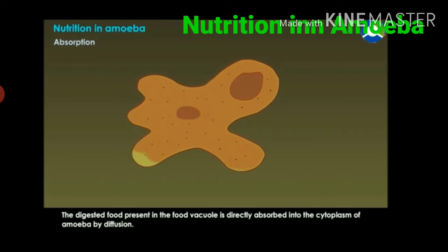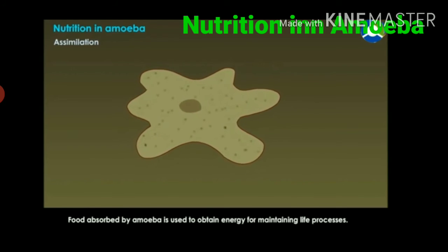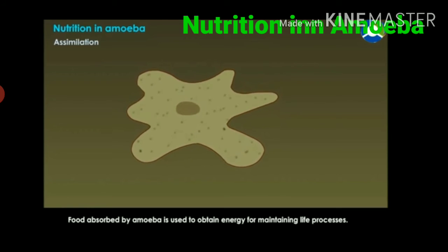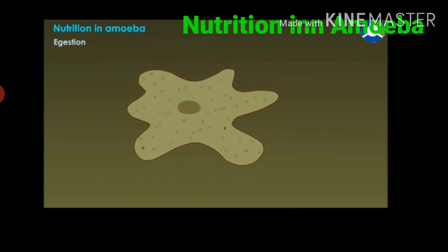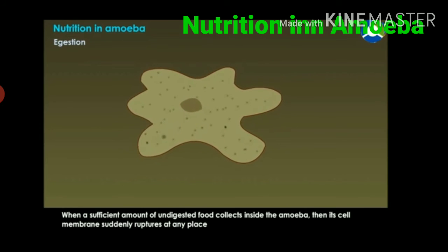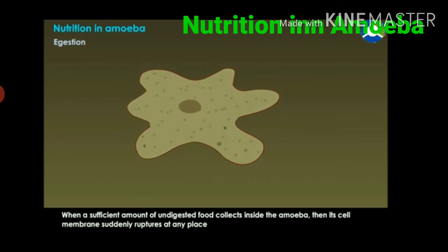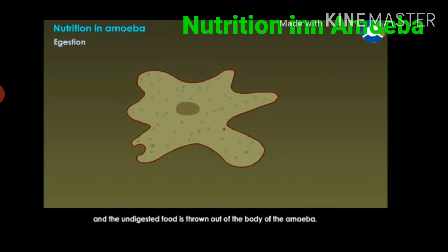Assimilation - food absorbed by amoeba is used to obtain energy for maintaining life processes. Egestion - when a sufficient amount of undigested food collects inside the amoeba, its cell membrane suddenly ruptures at any place.